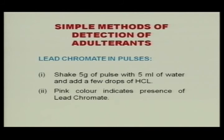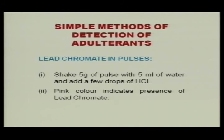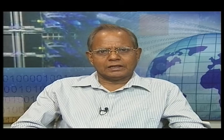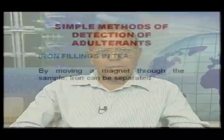For coloring matter in tea leaves, take a filter paper and spread a few tea leaves, then sprinkle with water to wet the filter paper. If coal tar dye is present, it will immediately stain the filter paper. Wash the filter paper and observe the stain against light — if the stain is there, it indicates exhausted tea or tea with coloring matter has been added. Iron fillings in tea can be detected by moving a magnet through the sample, since a magnet attracts iron. This test can be done with simple apparatus and reagents.